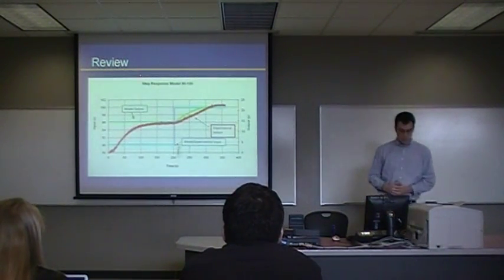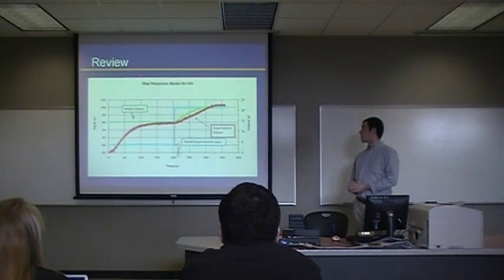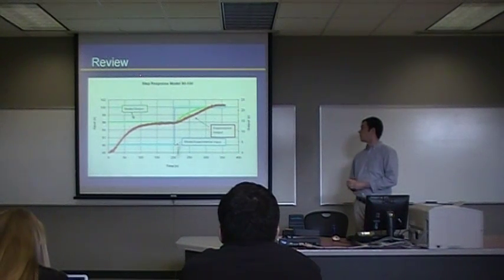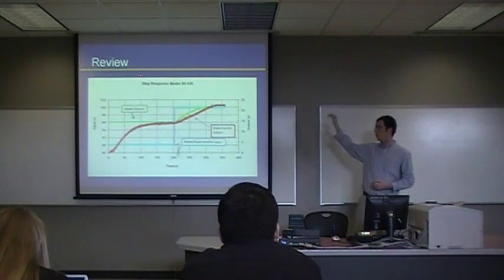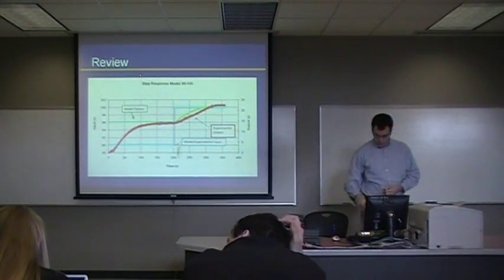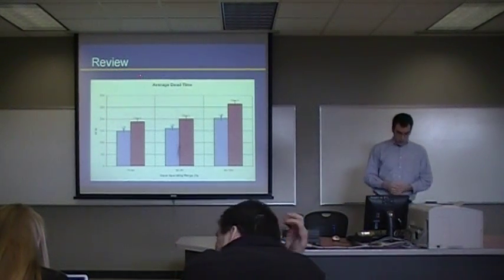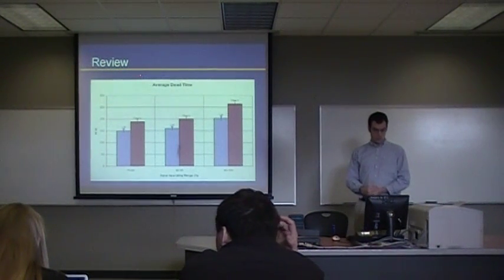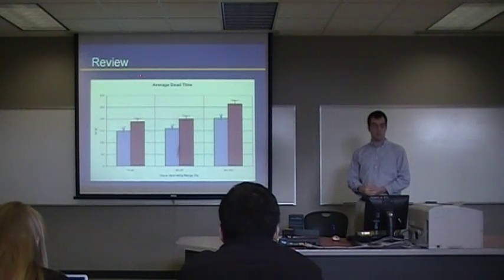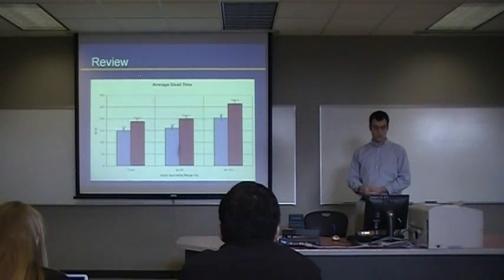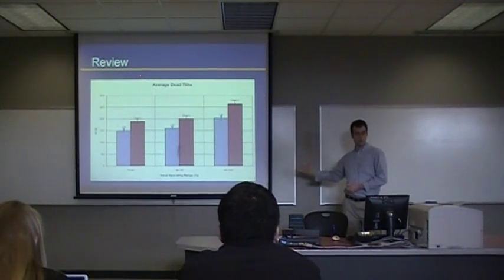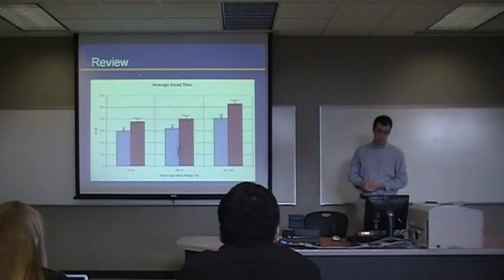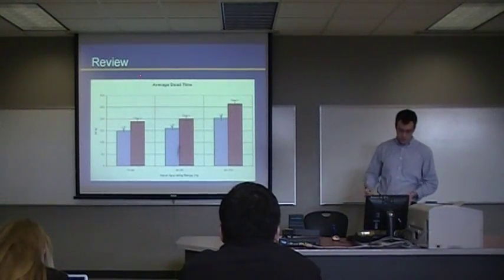Here's an example of the step response for our system that was introduced in last week's presentation. As you can see, the experimental output behaves a little bit more linearly than the model output. Here are some of the average dead times for the three different ranges that we've run. You can see the average dead times for the 90% to 100% input range are slightly higher than the other ranges.